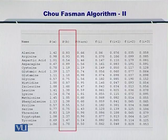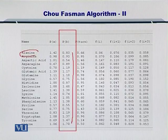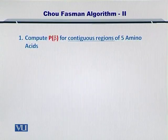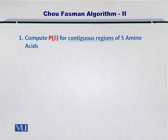You can select an amino acid and compute the overall propensity for several amino acids. Specifically, you compute the propensity for five contiguous amino acids — that is, five amino acids that are together in the sequence.